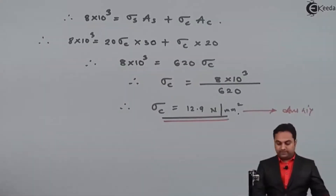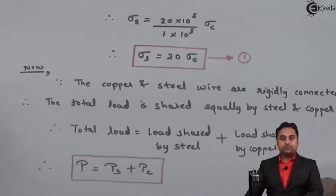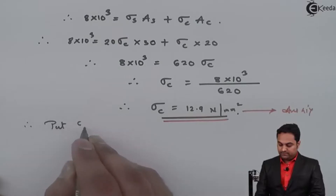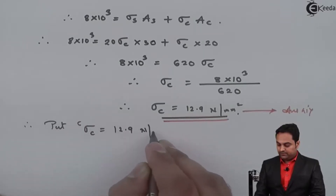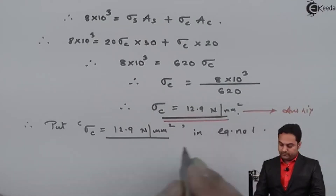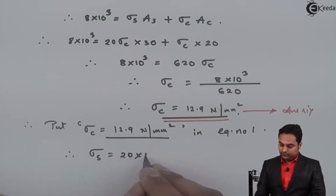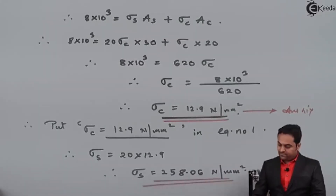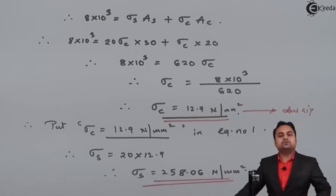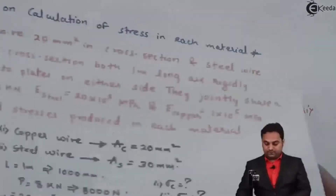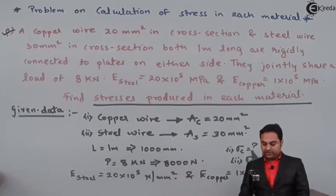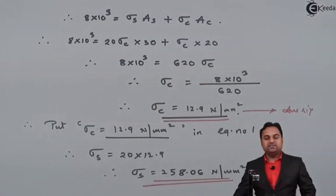Now, putting this value of σ_c into Equation 1 where σ_s = 20 × σ_c, substituting σ_c = 12.9 N/mm², we get stress in steel = 20 × 12.9 = 258.06 N/mm². This is the second answer. We were asked to find the stresses in each material — copper and steel — and we have calculated both, completing the question.